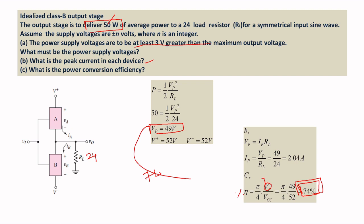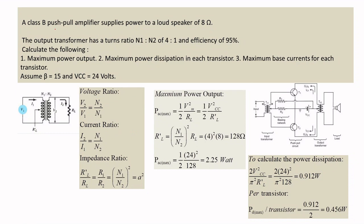The second problem involves designing a Class B push-pull amplifier with a loudspeaker of 8 ohms. The resistance at the output side is very small in a power amplifier, while the input impedance is kept large. The turns ratio n1:n2 is 4:1, efficiency is 95%, beta equals 15, and supply voltage is 24 volts. We need to find the maximum power output, maximum power dissipation, and maximum base current of each transistor.